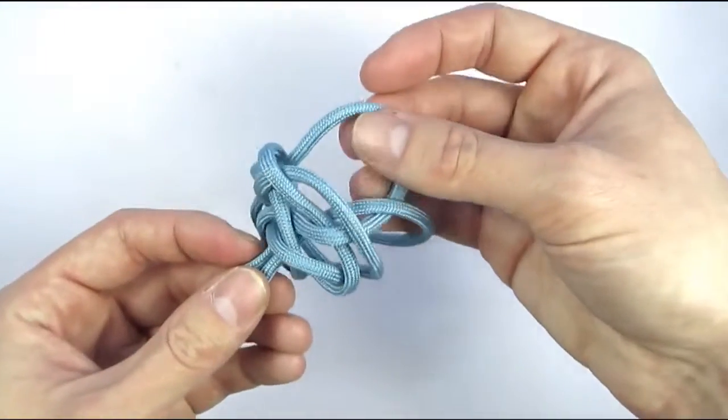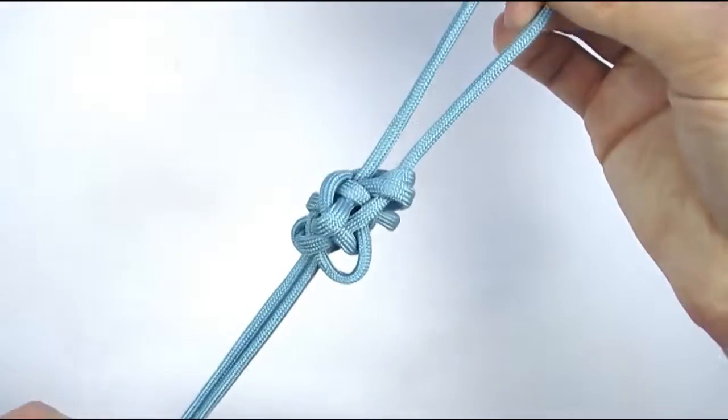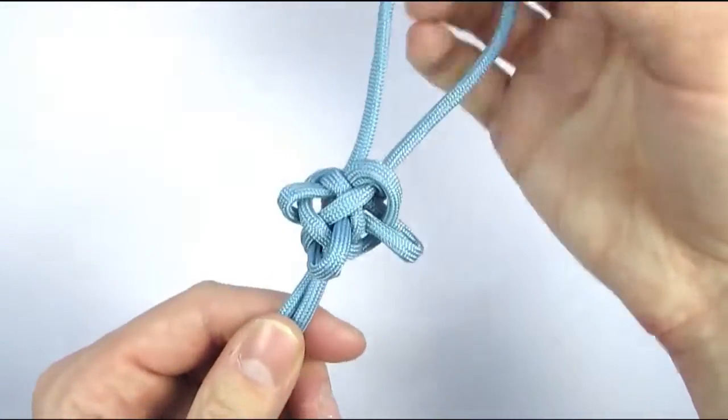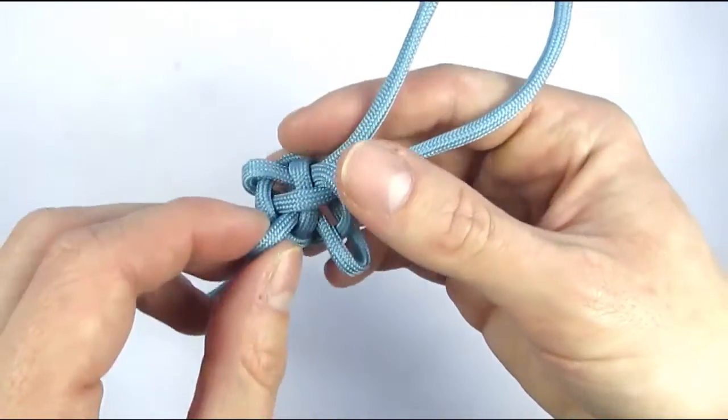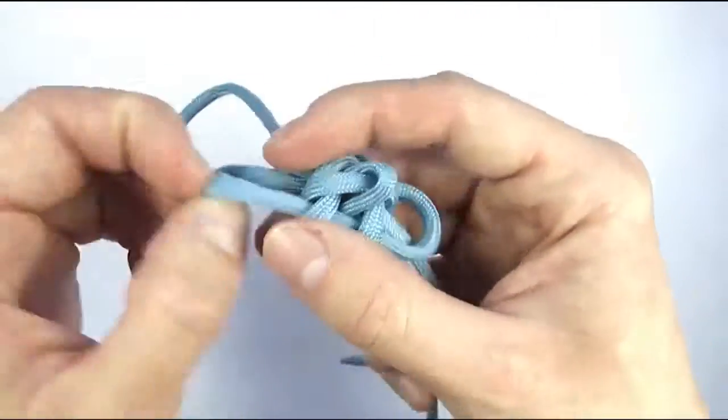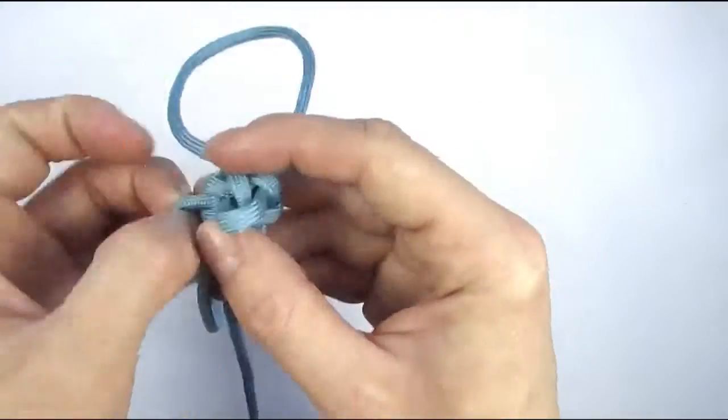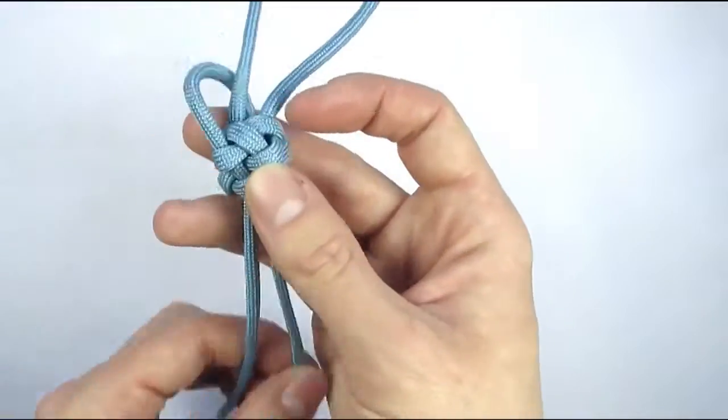With this we have tied our double lanyard knot and you now need to slowly and very carefully pull out the slack. I'm doing this in fast forward so it won't waste too much of your time, but it does require some patience to adjust the knot.